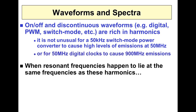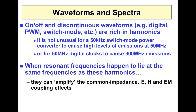The problem is specifically when we have resonances — in other words, accidental antennas — that lie at the same frequencies or close to these harmonics. Then we get the common impedance and electric-magnetic coupling effect, amplified maybe 20, 30, 40, 50 dBs. So this is where many of our problems arise.